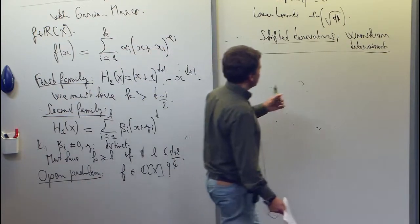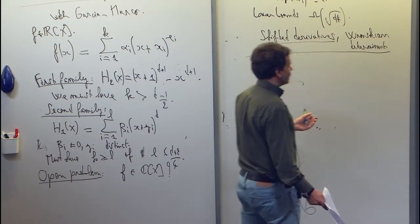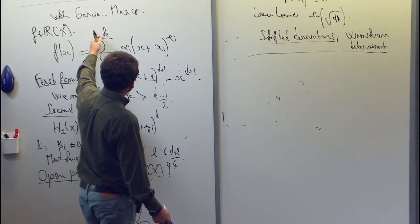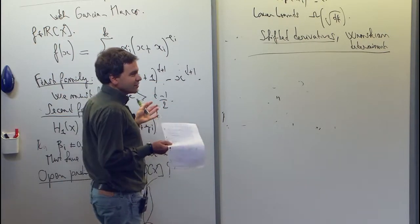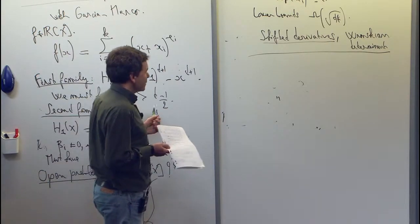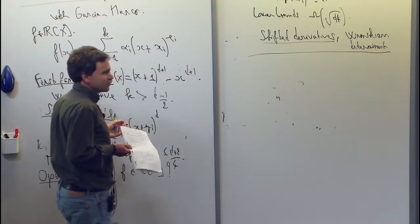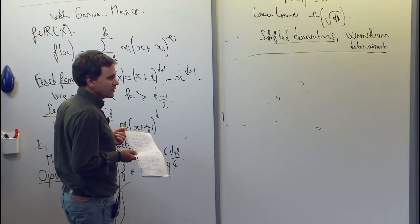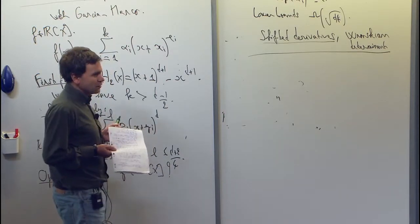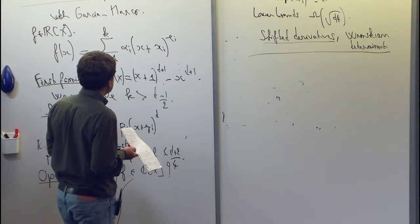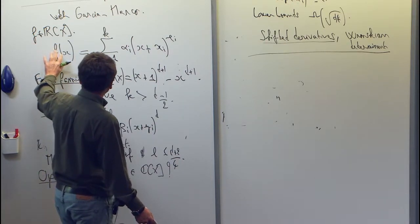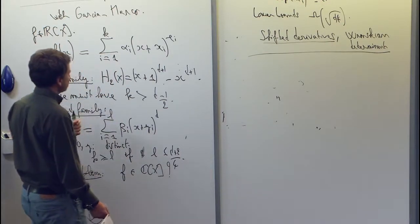So if you know about the Wronskian, you know that in general, if you have, say, k polynomials, the Wronskian is a k-by-k determinant, and it tells you, in principle, if your polynomials are linearly independent. But these determinants are hard to analyze in general. It's hard to know when they are identically zero. So we managed to find some more indirect way of deciding when these determinants vanish.